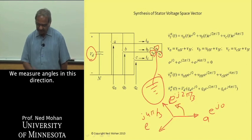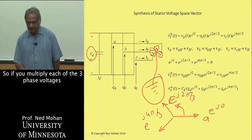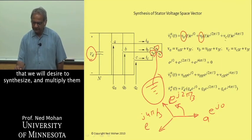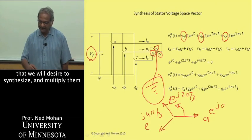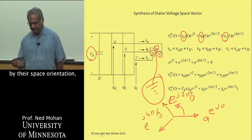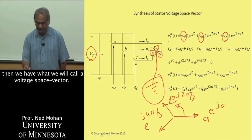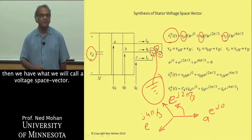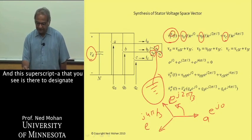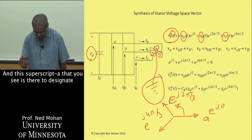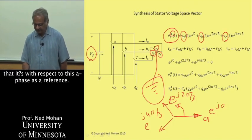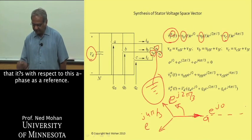If you multiply each of the three phase voltages that we desire to synthesize and multiply them by their space orientation, then we have what we will call a voltage space vector. And this superscript A that you see is there to designate that it's with respect to this A phase as the reference.